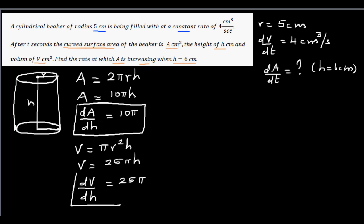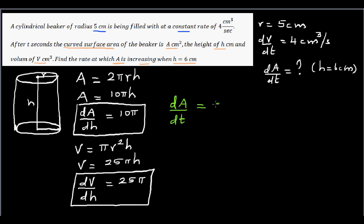The volume increases constantly with respect to height at 25π, and the curved surface area increases with respect to height at 10π. The question asks for the rate of change of area when height is 6. To find dA/dt, I'll start with dA/dH, because that's what I have. I need to cancel the dH, so I'll need dH in the denominator.